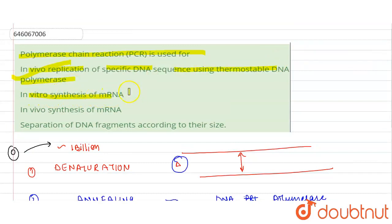Next is in vitro synthesis of mRNA - no. In vivo synthesis of mRNA - no, we are amplifying the DNA, not the mRNA. Separation of DNA fragments according to size - no, separation of DNA fragments according to their size is done by gel electrophoresis. So the correct answer over here is option one.